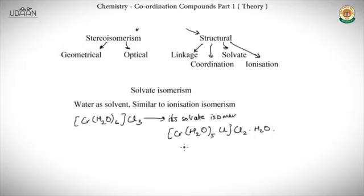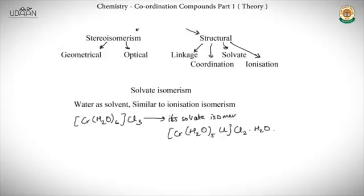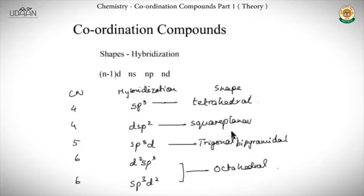Solvate isomerism is similar to ionization isomerism, but the difference is in the number of water molecules. Water is taken as the solvent, and a water molecule from outside the coordination sphere may swap with a Cl inside — giving Cl2 outside and a dot-H2O, since H2O is now acting as a solvent molecule.